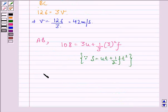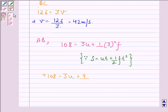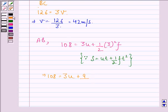This implies 108 equals 3u plus 9 by 2 f. We call this equation 1.